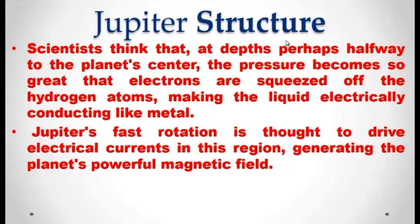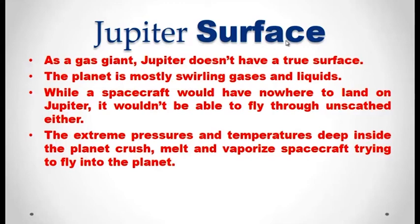Jupiter does not have a true surface, because the four outer planets are completely gaseous and dust planets. Scientists have not found any surface on these four planets. The planet is mostly swirling gases and liquids. While a spacecraft would have nowhere to land on Jupiter, it would not be able to fly through unscathed either. The extreme pressures and temperatures deep inside the planet crush, melt and vaporize any spacecraft trying to fly into the planet.